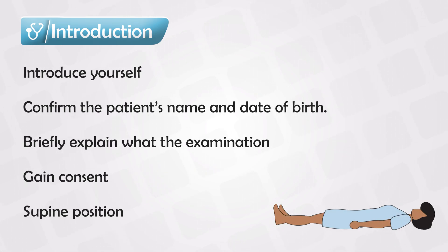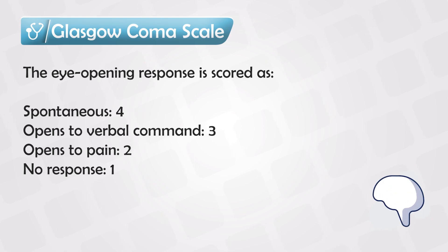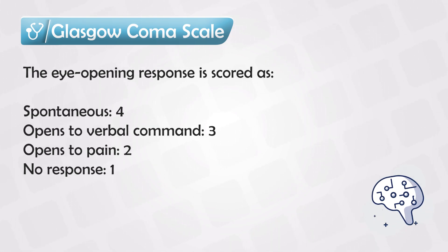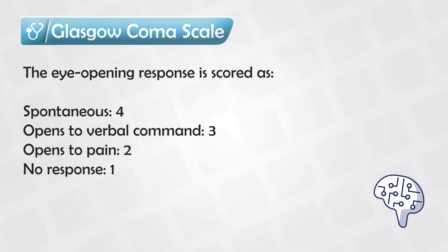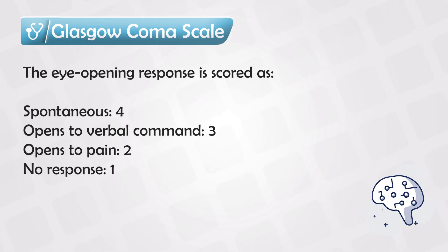The patient should be in supine position and you can start by performing the Glasgow Coma Scale. It tests three parts: the eyes, the mouth, and the body. The patient gets four points if he can open his eyes spontaneously, three points if he opens them to commands, two points if he opens them only to pain, and one point if there is no response.